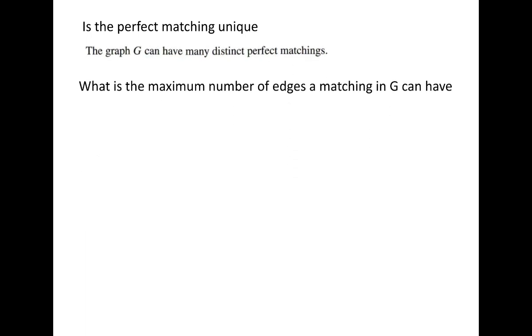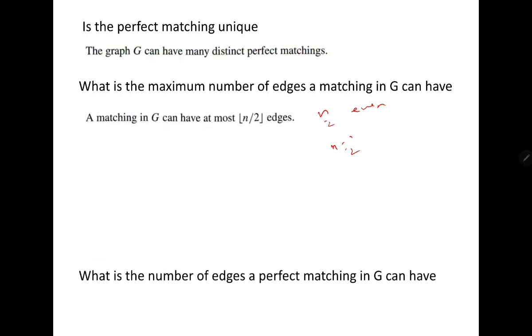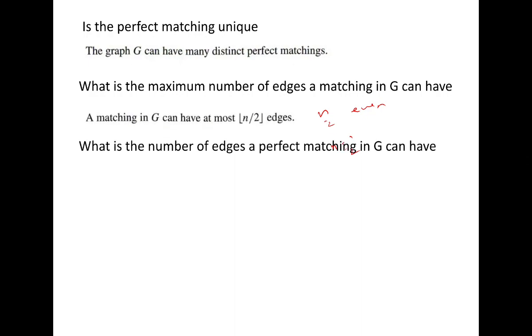Some quick questions: Is perfect matching unique? Of course not. What is the maximum number of edges a matching can have? It is ⌊n/2⌋ — exactly n/2 if n is even, otherwise (n−1)/2. What is the number of edges a perfect matching can have? A perfect matching is only possible with exactly n/2 edges.